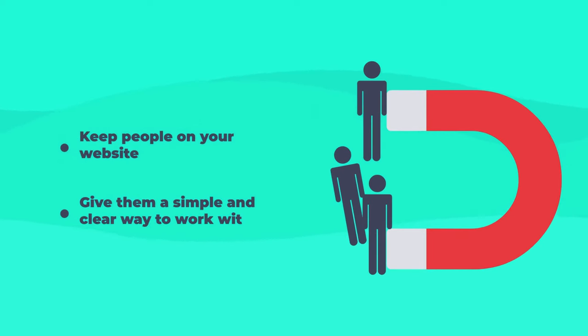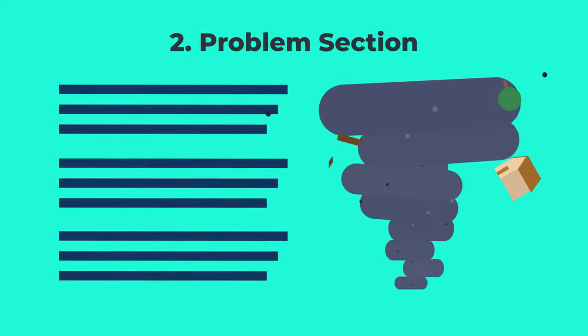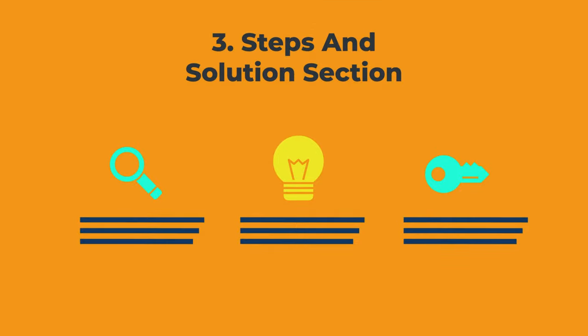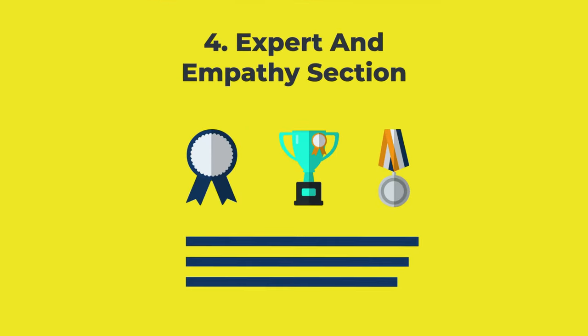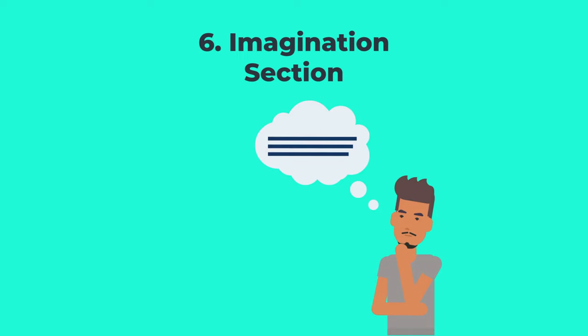In this section I'm going to show you how to write the copy for your home page to keep people on your website and give them a simple and clear way to work with you. Here are the six essential sections of a landing page or home page: number one, your one-liner and hero section; number two, your problem section; number three, a steps or solution section; number four, an expert and empathy section; number five, a call-to-action section; and number six, an imagination section.